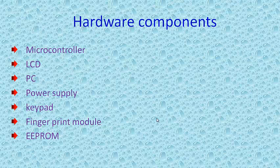Other components include: the display unit — an LCD (liquid crystal display), PC (personal computer), power supply, keypad for voting, fingerprint module, and a memory called EEPROM to store the votes. We will see everyone together.